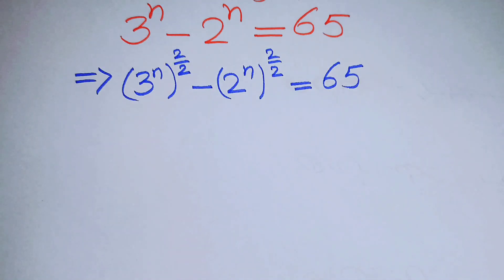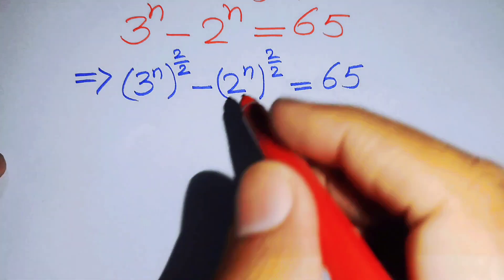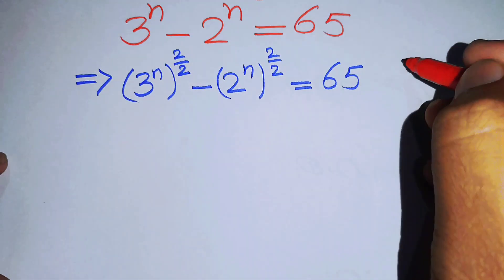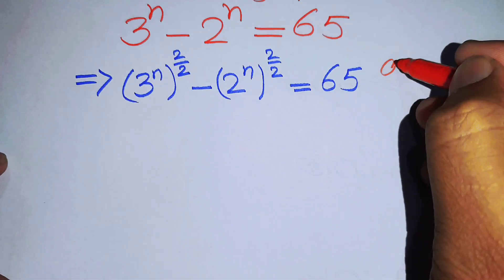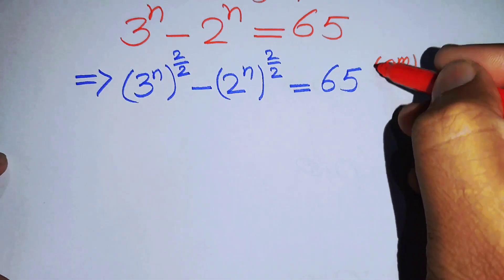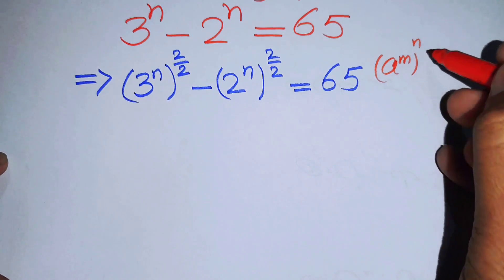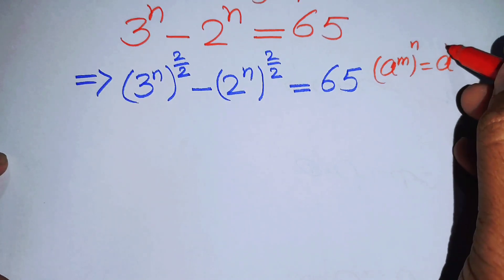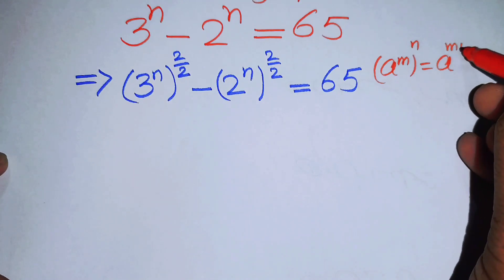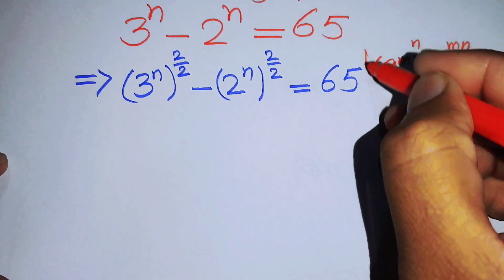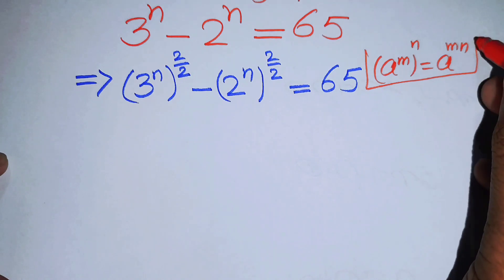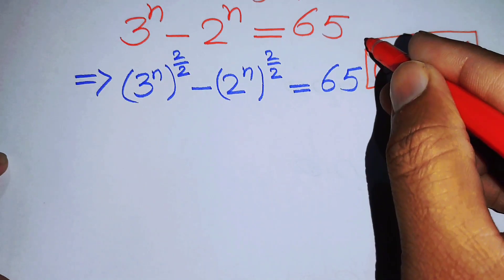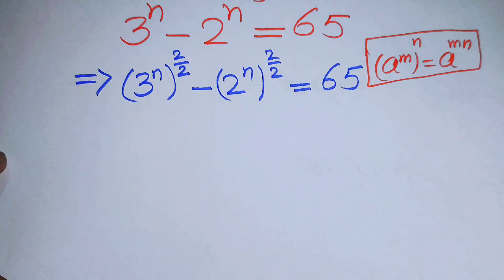In the next step we apply the exponential law. You know that if we have a to the power of m, to the power of n, it is equal to a to the power of m times n. We will use this law here.